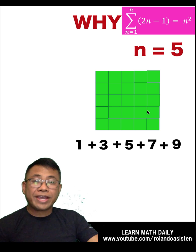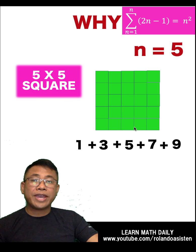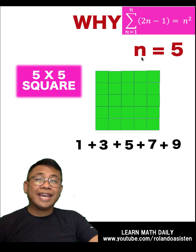We form a square. And this square is a 5 by 5 square. And look at the value of our n. n is equal to 5.